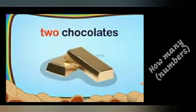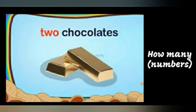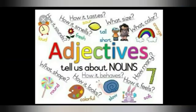Next one — numbers. Look at the picture — two chocolates. Here, two is a word we use to describe how many chocolates there are. Two is an adjective word.